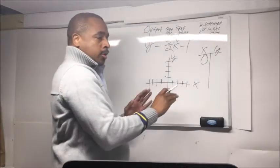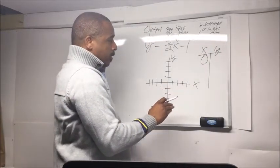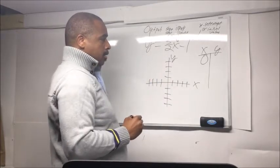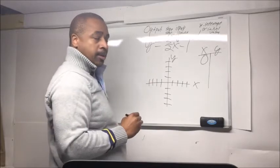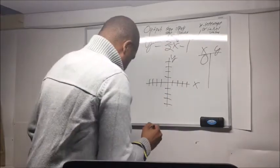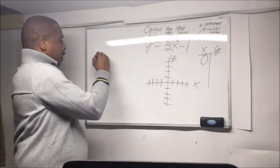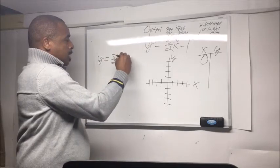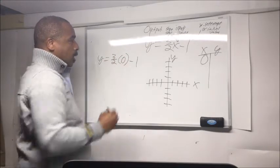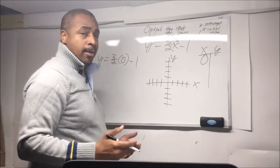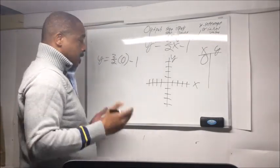Because it's on the coordinate plane, we can try 0 as a value to see if it exists on this line. So y equals 3 over 2 times 0 minus 1. Another reason we choose 0 is because any number multiplied by 0 is 0, so it's just easy. It gets rid of it.